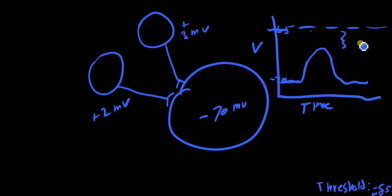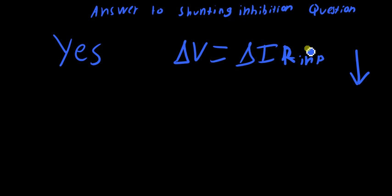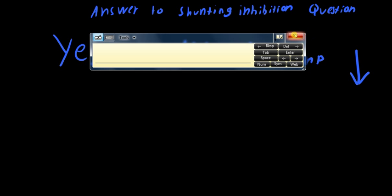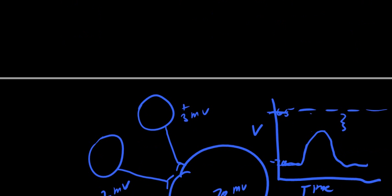So the thing to keep in mind is that we'd be multiplying by a smaller number here, whether we opened up more excitatory channels or more inhibitory channels.